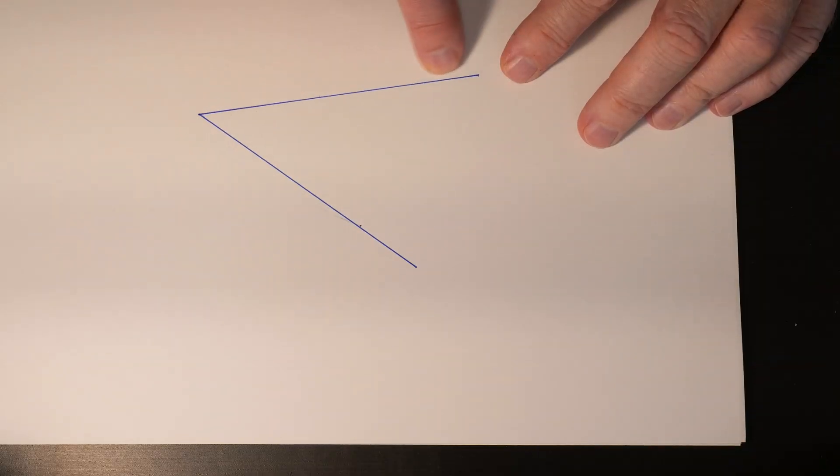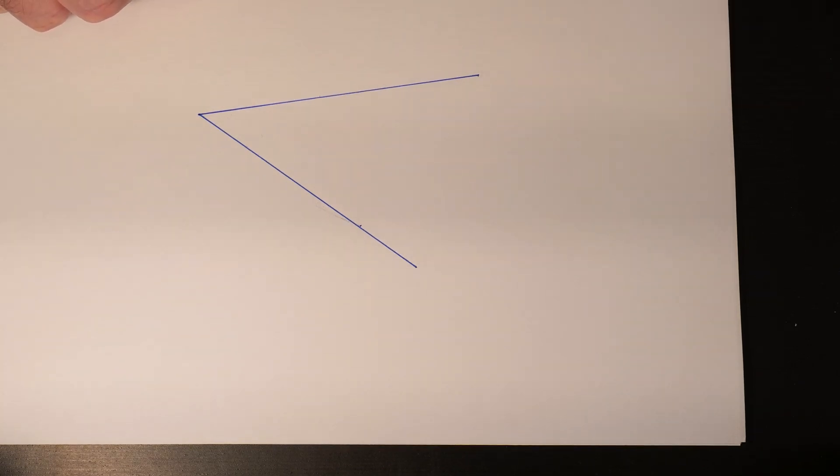What if you've got some oddball angle that you need to find the exact bisecting point for, let's say for an example for a miter joint? Well, there's an easy way to do that again with your compass.